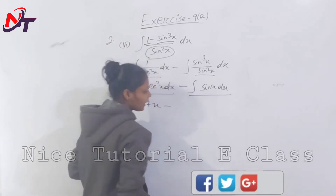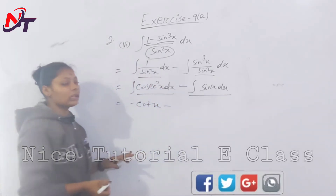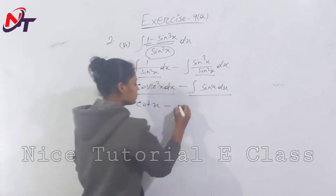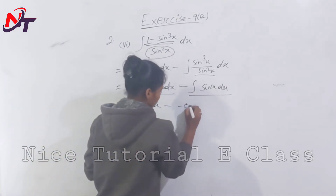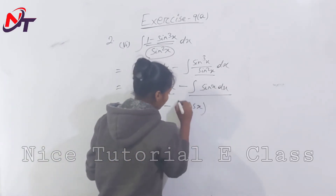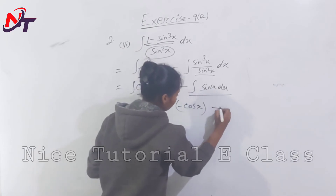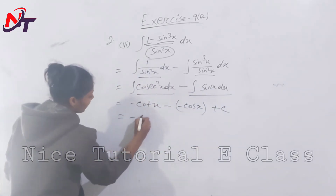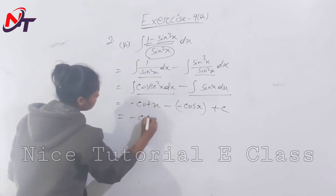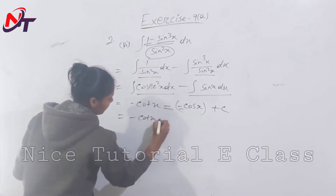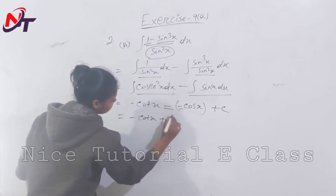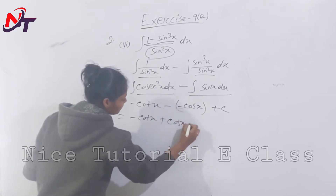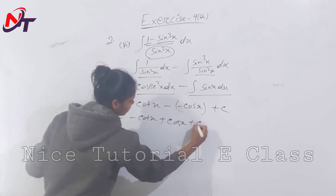Integration of cosec square x is minus cot x, and integration of 1 dx is x. Then minus cot x minus x. But checking signs: minus cot x, minus minus gives plus, so the answer is minus cot x plus cos x plus c.